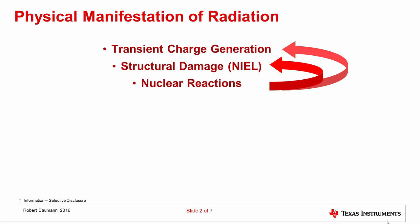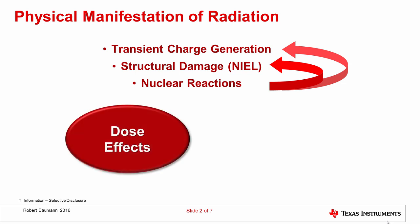So these are the three mechanisms going on when radiation interacts with matter. We can divide the effects we see in devices into two categories. The first is the so-called dose effects. There are dose effects related to charge, which is what we're talking about in this section, and there are also dose effects related to structural damage, which we'll deal with in a separate section. On top of dose effects, which are basically chronic exposure to radiation —